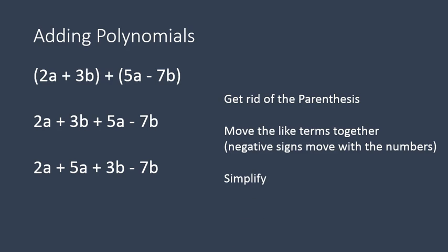Then you can simplify by adding the like terms. 2a plus 5a gives us 7a. 3b minus 7b leaves us with negative 4b. Notice we can't do anything else — we can't join together 7a and negative 4b. But we can join all the a's together and all the b's together. That's how we add polynomials.